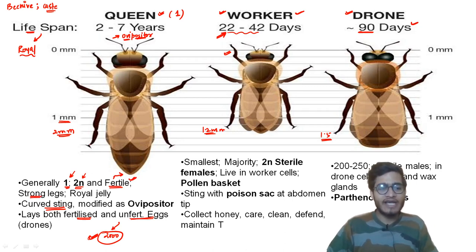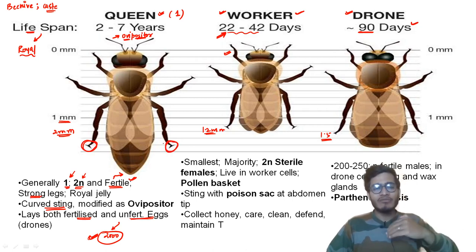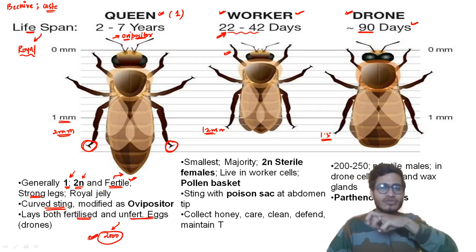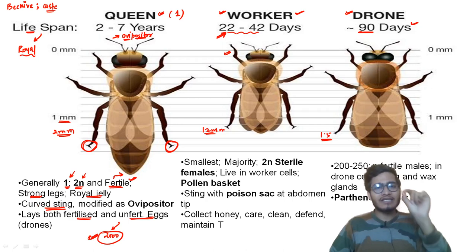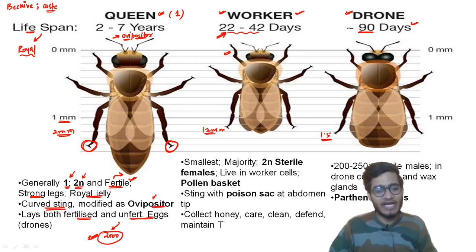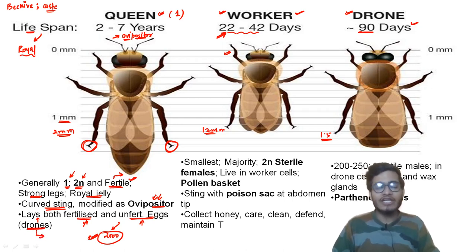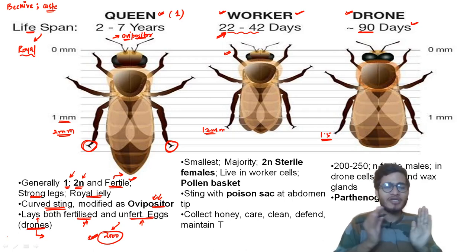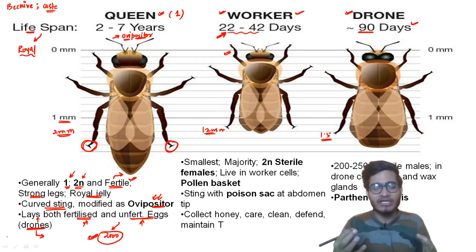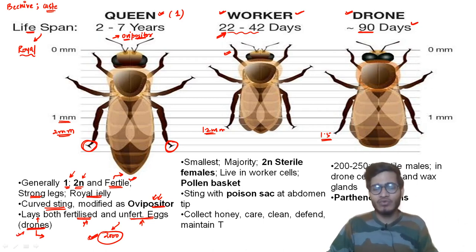The queen produces many eggs, has strong leg muscles enabling her to move around the beehive, and feeds on royal jelly. Her sting is curved and modified as ovipositor. She lays fertilized eggs which form workers and queens, and unfertilized eggs which form drones via parthenogenesis. Now let's come to the worker — workers are the smallest in size and present in the majority.